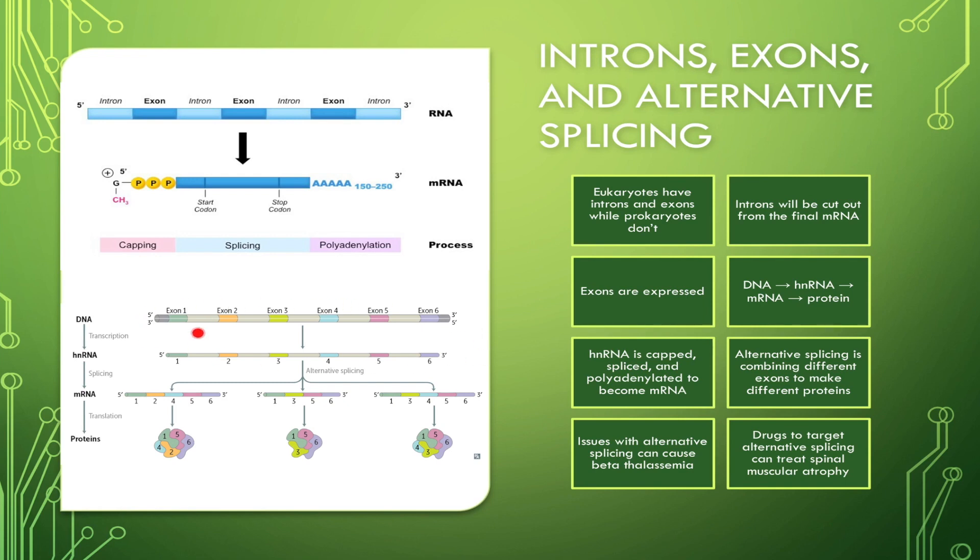So let's take a look down here. You have six different exons, and you can see that you can make different combinations of exons by deciding which ones to keep in and which ones to take out.